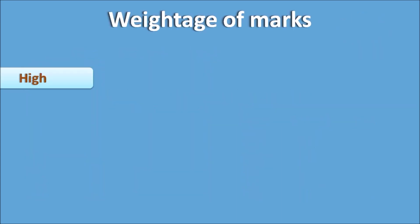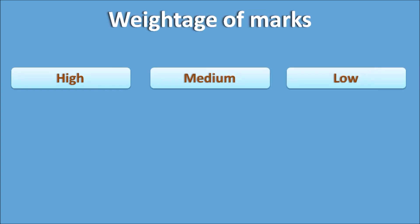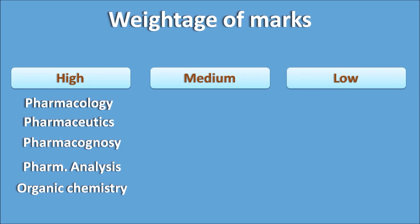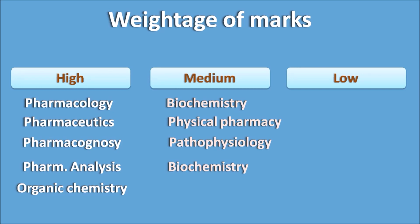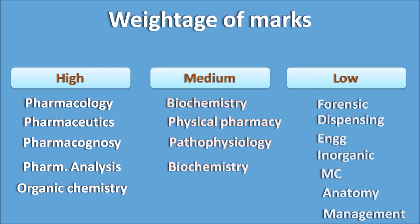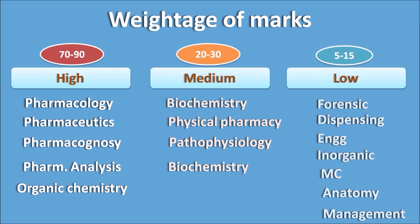Subjects can be divided into high, medium, and low weightage. High weightage: Pharmacology, Pharmaceutical Analysis, Cognacy, Organic Chemistry, and Industrial Pharmacy. Medium weightage: Biochemistry, Physical Pharmacy, and Pathophysiology. Low weightage: Forensic, Dispensing Pharmacy, Engineering, Inorganic Chemistry, Medicinal Chemistry, Anatomy, and Management. Note that weightage may vary in future years. Expect 70–90 questions from high-weightage subjects, 20–30 from medium, and 5–15 from low.